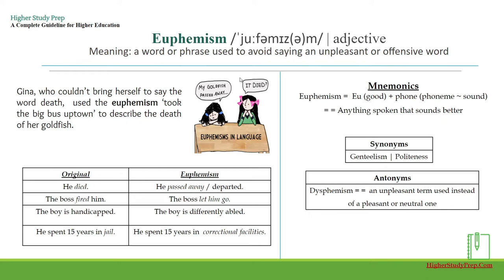Euphemism — it's a noun, which means a word or phrase used to avoid saying an unpleasant or offensive word. For example, Gina, who couldn't bring herself to say the word death, used the euphemism 'took the big bus uptown' to describe the death of her goldfish. Here are some more examples of euphemism: instead of saying 'he died,' we can use the euphemism 'he passed away or departed.' Instead of saying 'the boss fired him,' we can say 'the boss let him go.' 'The boy is handicapped' can be said as 'the boy is differently abled.' And 'he spent 15 years in jail' can be rephrased as 'he spent 15 years in correctional facilities.'